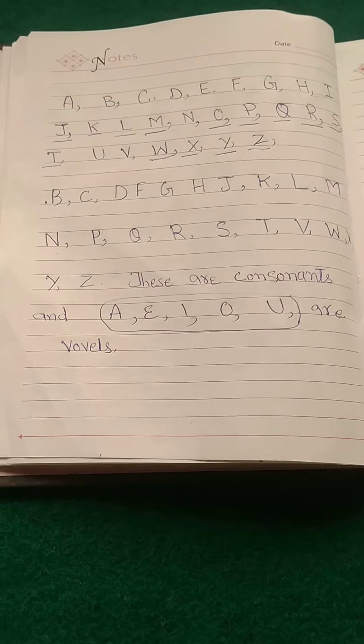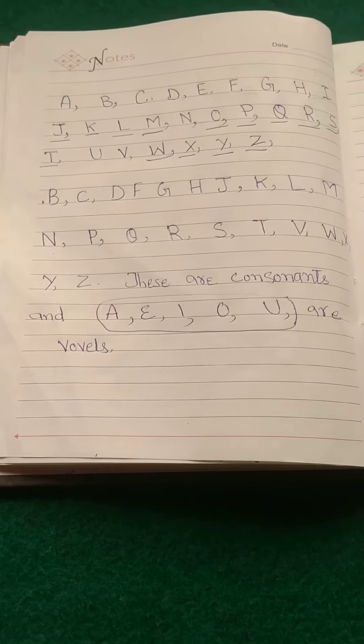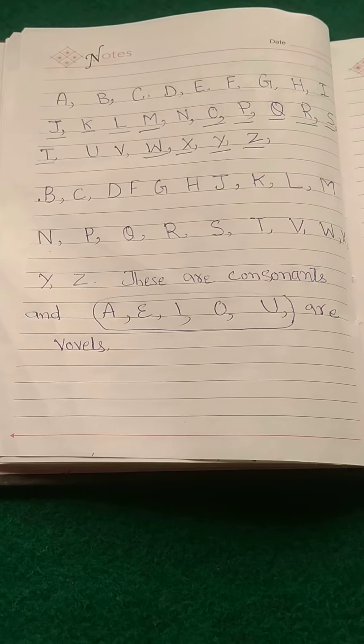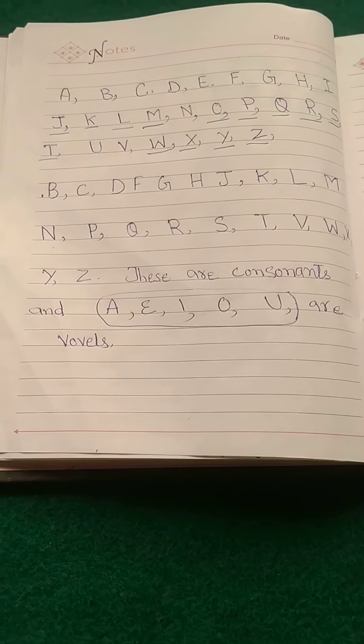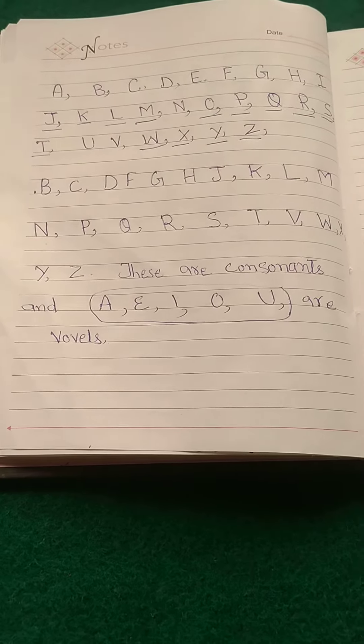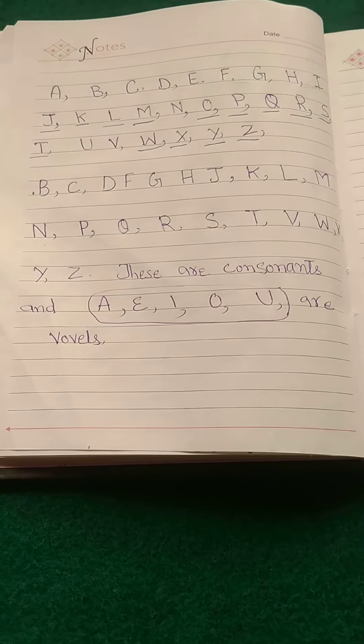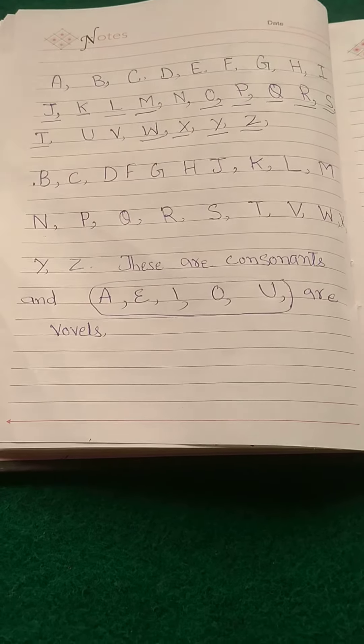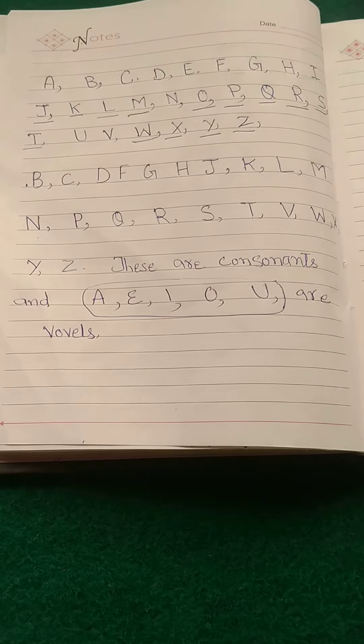And Z. B, C, D, E, G, H, J, K, L, M, N, P, Q, R, S, T, V, W, X, Y, Z. These are consonants.